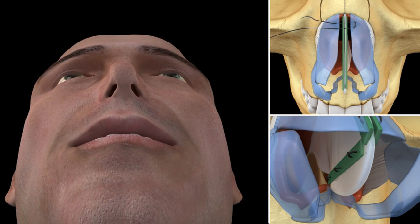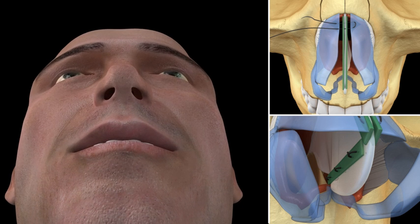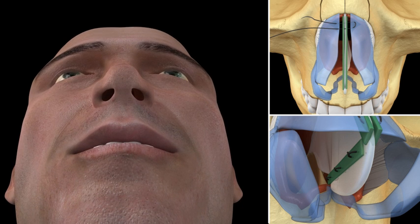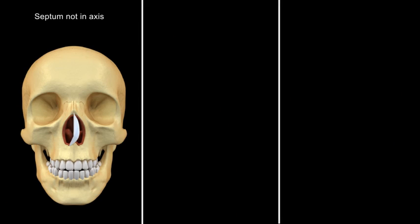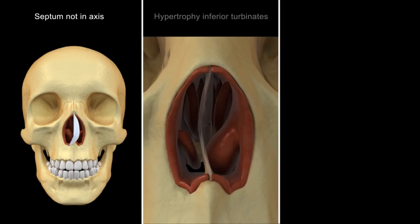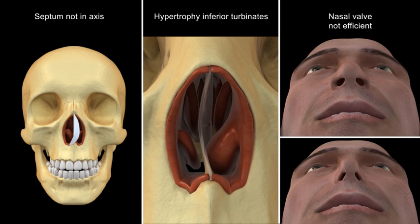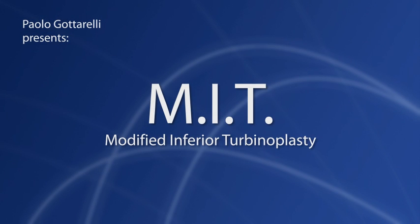In septoplasty surgery, it is essential to maintain the septum in axis. This is also crucial to avoid inferior turbinate hypertrophy relapses, even if well treated with the MIT — modified inferior turbinoplasty.